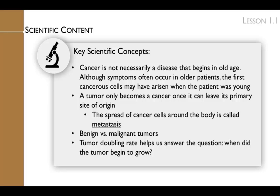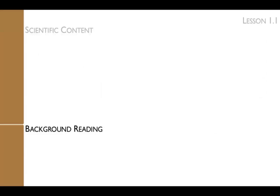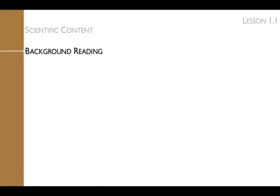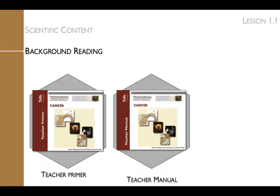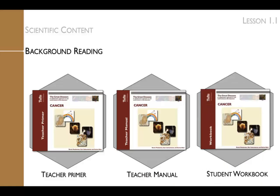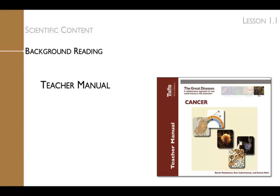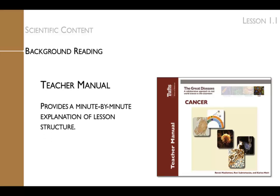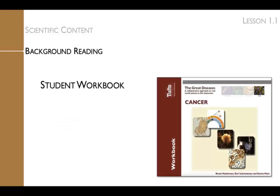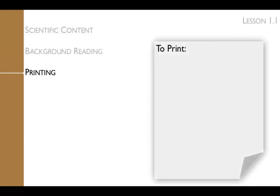Another key concept is how to calculate the tumor doubling rate, which helps us answer the question: when did the tumor begin to grow? You can review the scientific content in the background reading provided in the Teacher Primer, the Teacher Manual, and the Student Workbook. The Teacher Primer provides in-depth knowledge about the scientific content. The Teacher Manual provides a minute-by-minute explanation of lesson structure. The Student Workbook provides additional explanation for students. Be sure to print the Lesson Worksheet and the Homework Worksheet.